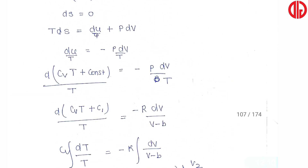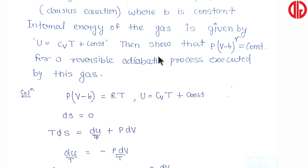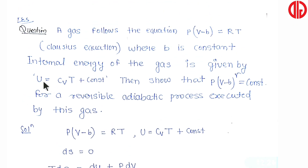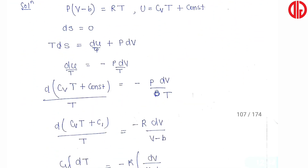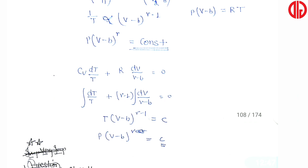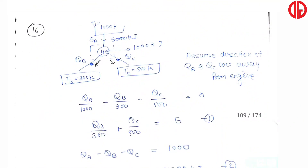So the basic derivation we had to do was: for the reversible adiabatic process executed by a gas which follows p(v−b) = RT and has internal energy u = cv·T + constant, we have derived p(v−b)^γ = constant. I hope it is clear. If you have any doubt, you can ask in the comment box.